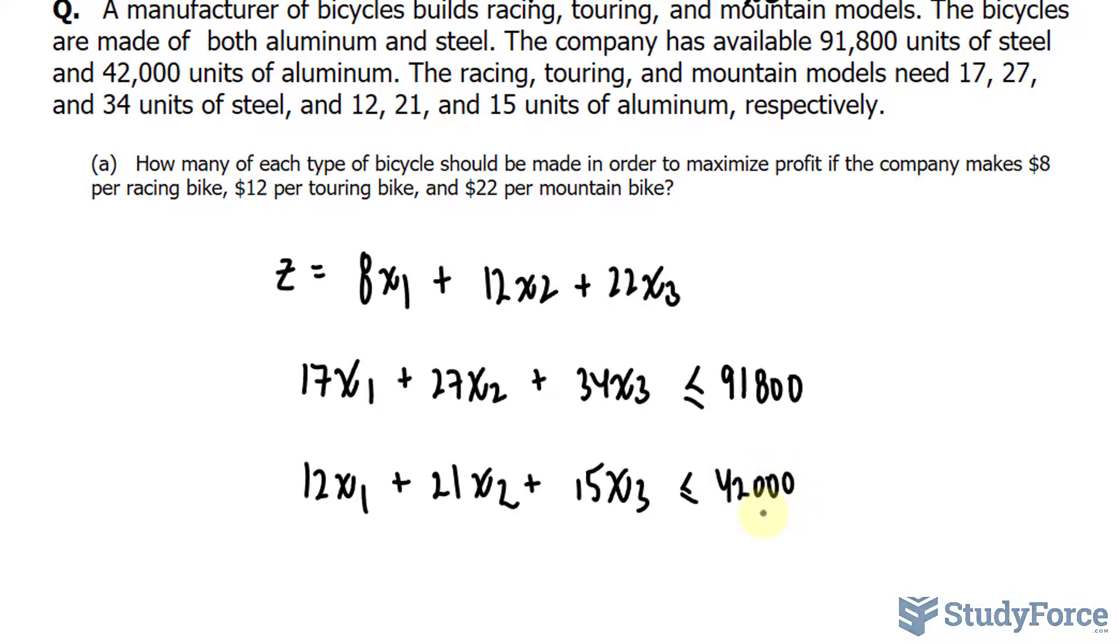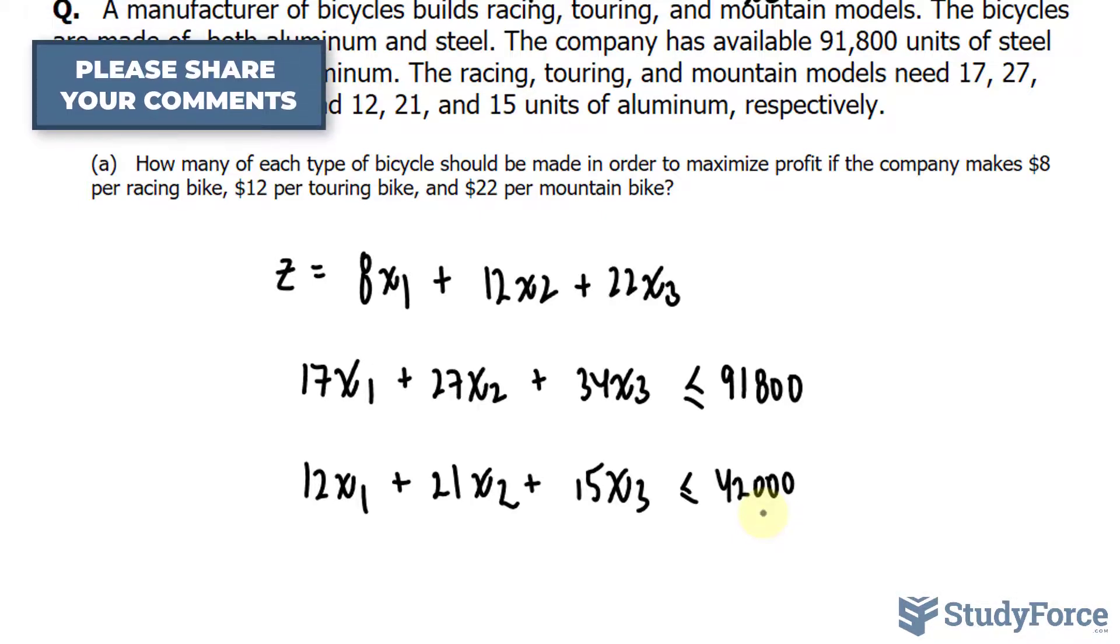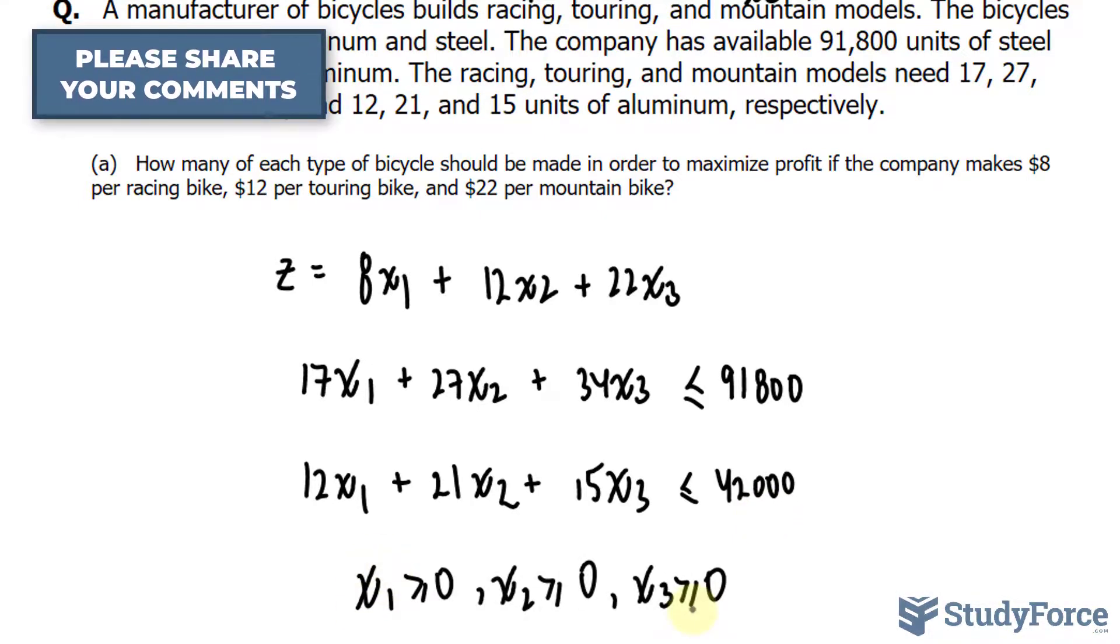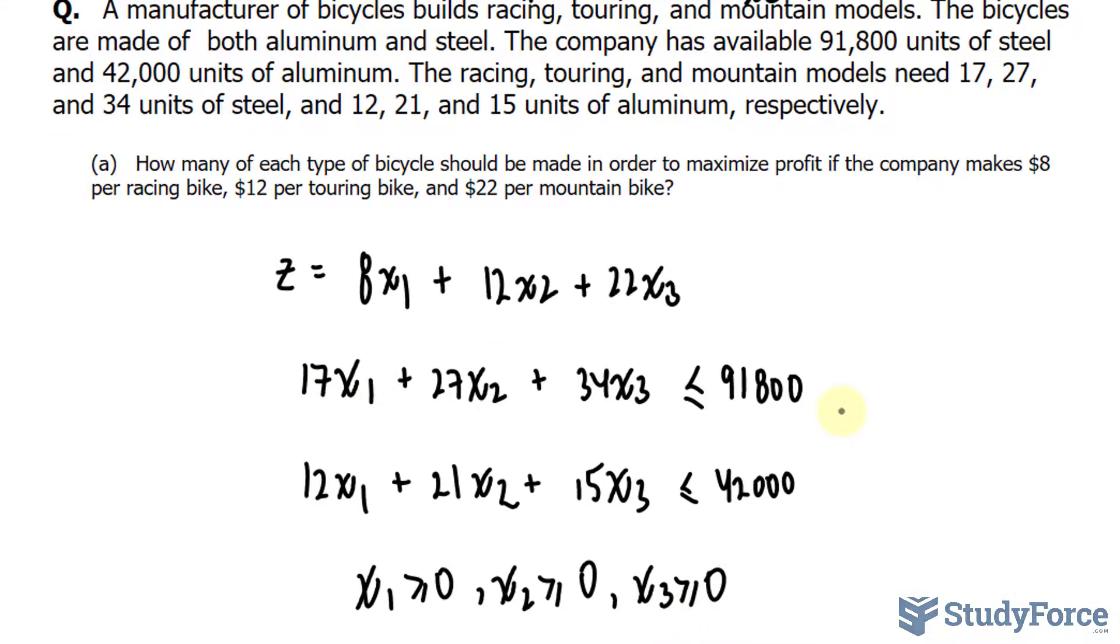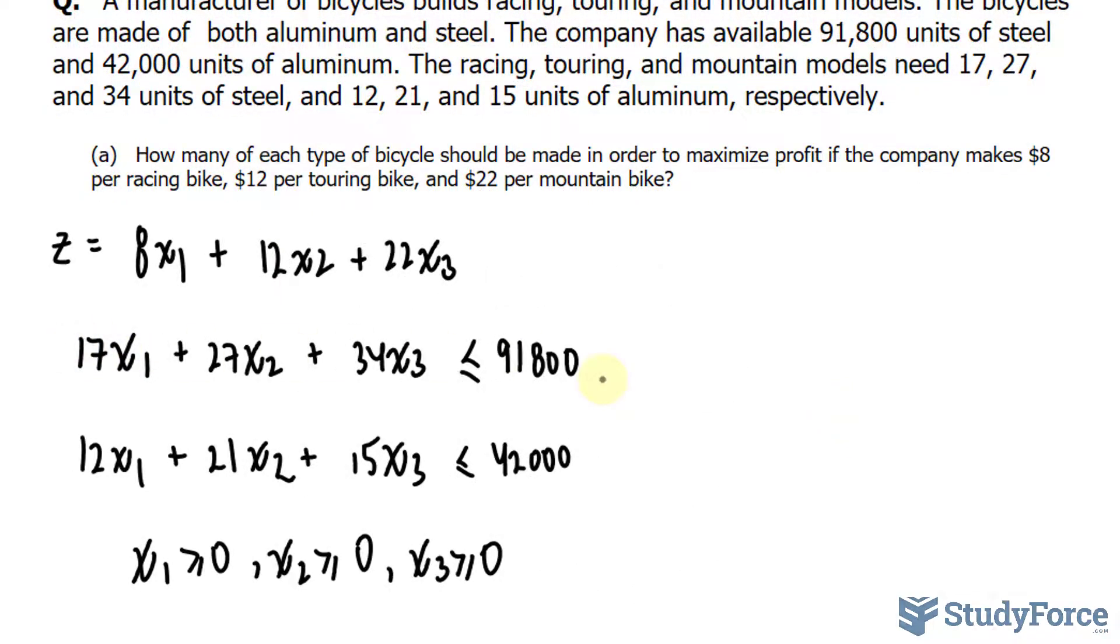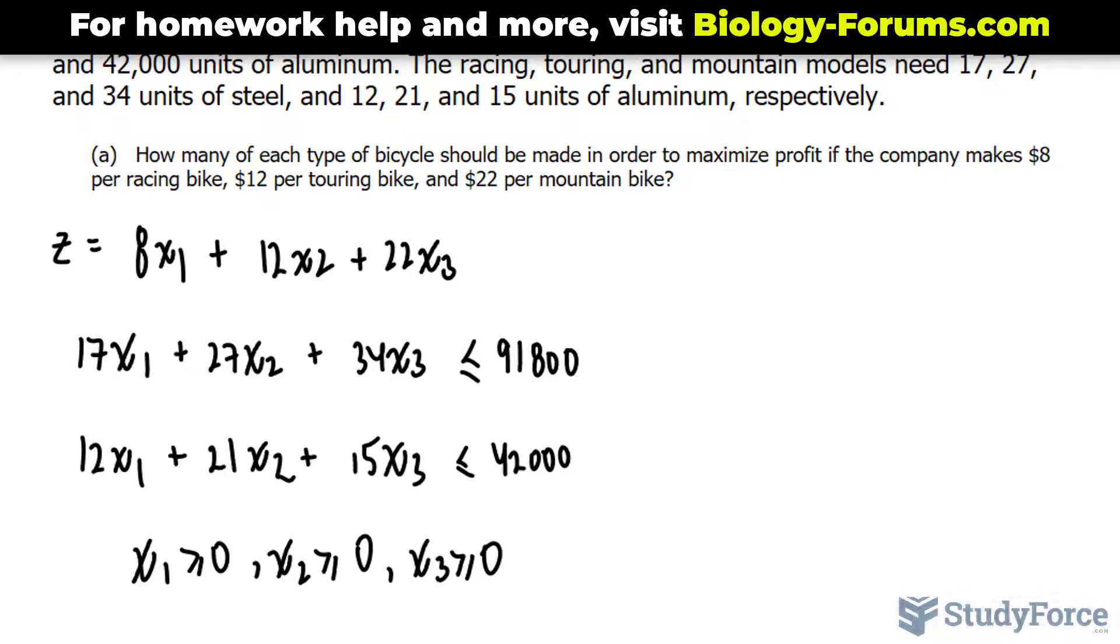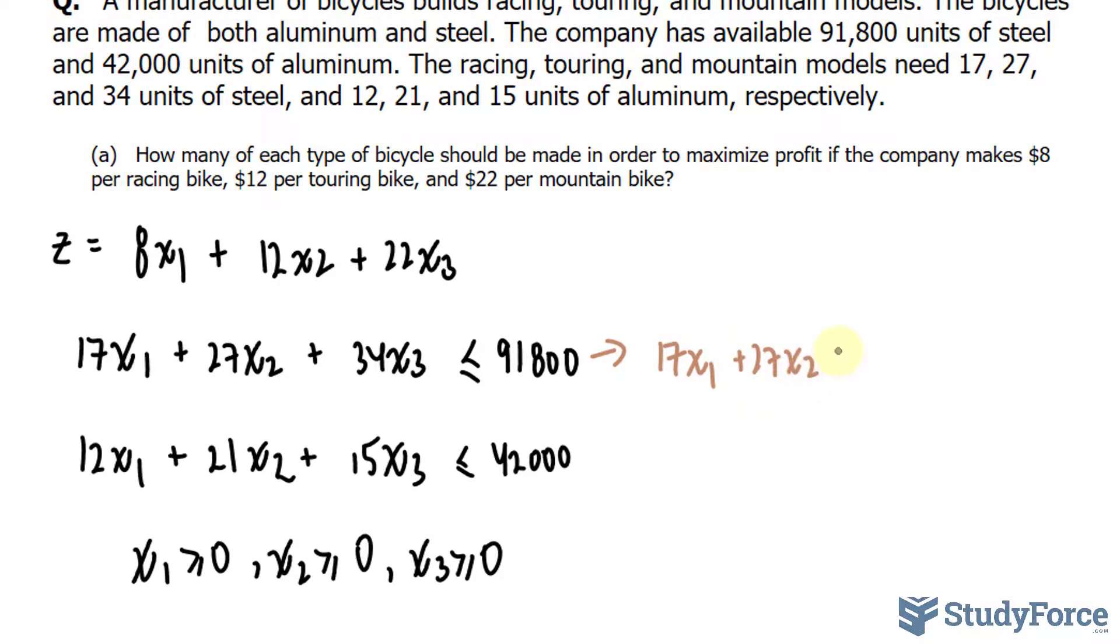Of course, X sub 1, X sub 2, and X sub 3 need to be greater or equal to 0. So you need to make a note of that. Now that we've written the constraints and our objective function, we want to change these constraints into equations and that can be done by introducing slack variables. We had a discussion on slack variables in question 1 of this series, so if you want something more extensive, be sure to watch question 1 where we explain why they're used. So to change this constraint into an equation, I'll rewrite it, but I'll introduce a slack variable. So this becomes 17X sub 1 plus 27X sub 2 plus 34X sub 3 plus S sub 1 is equal to 91,800. And you want to introduce one for each constraint. So this becomes the same thing plus S sub 2 is equal to 42,000.